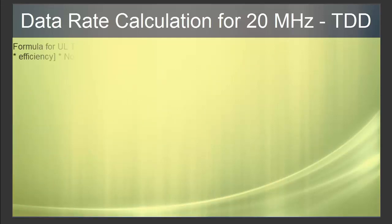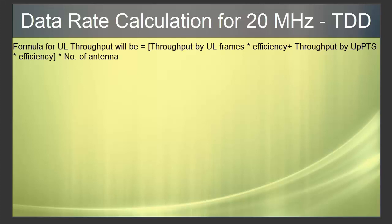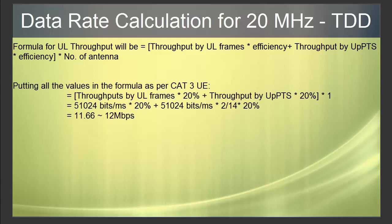In the same manner, the formula for uplink throughput is: (throughput from uplink frames × efficiency) + (throughput from uplink special subframe PUSCH × efficiency), multiplied by number of antennas. Putting all the values in the formula as per Category 3 UE, the uplink transmission data rate comes out to be 12 Mbps.